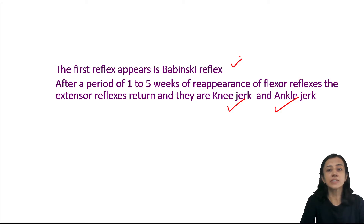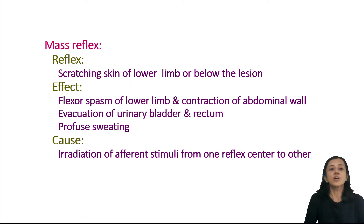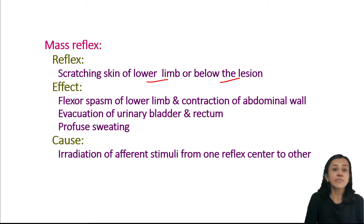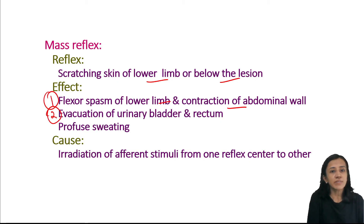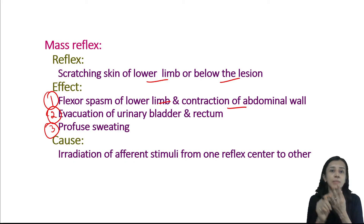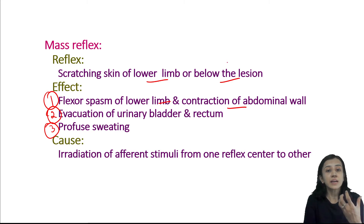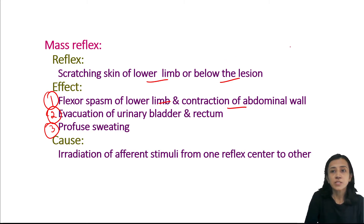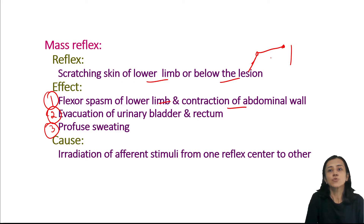Another important finding is the mass reflex. To elicit it, you scratch the skin of the lower limb or below the level of the lesion. The effects are: reflex spasm of the lower limb with contraction of the abdominal wall; evacuation of bowel and bladder; and profuse sweating. These three changes occur together because stimuli radiate from one reflex center to another — this spreading is called irradiation, producing multiple effects from a single stimulus.